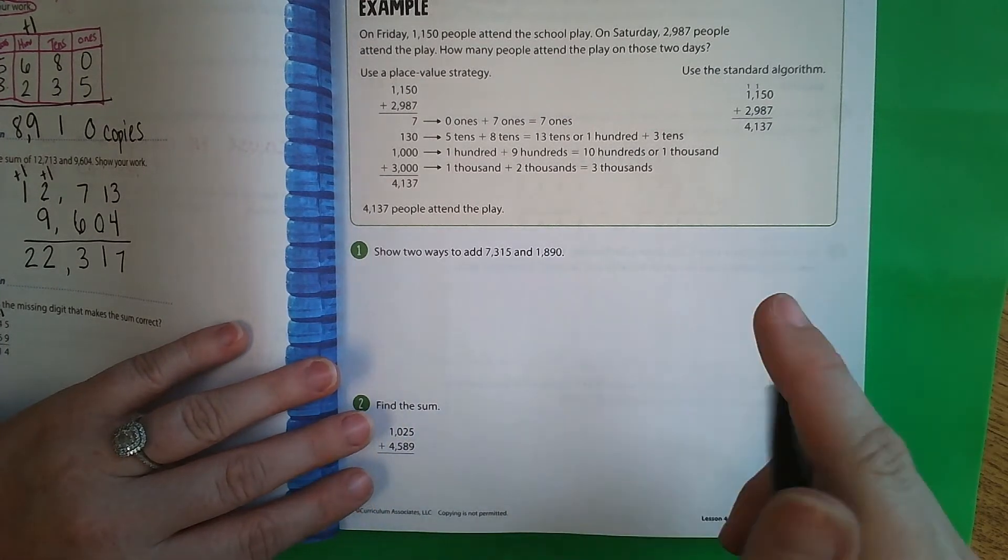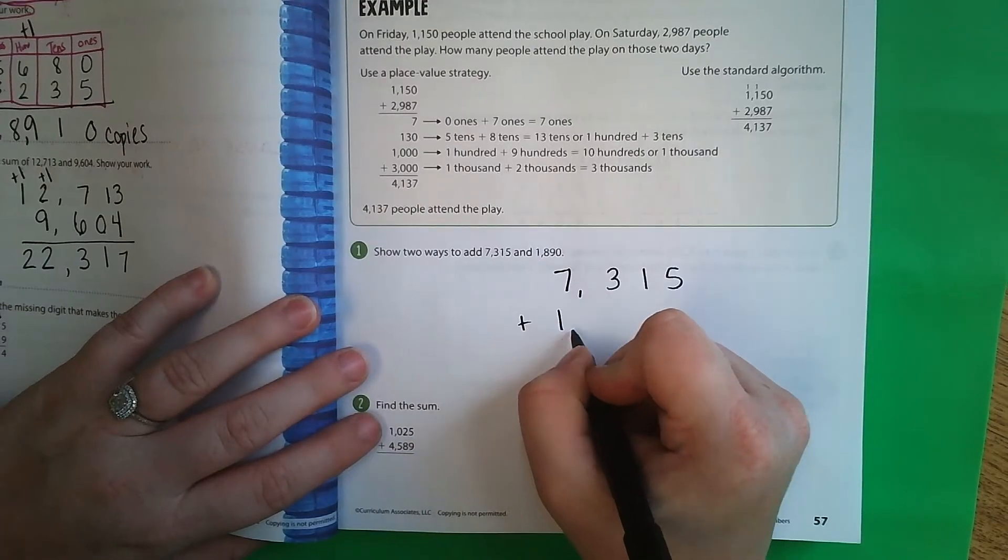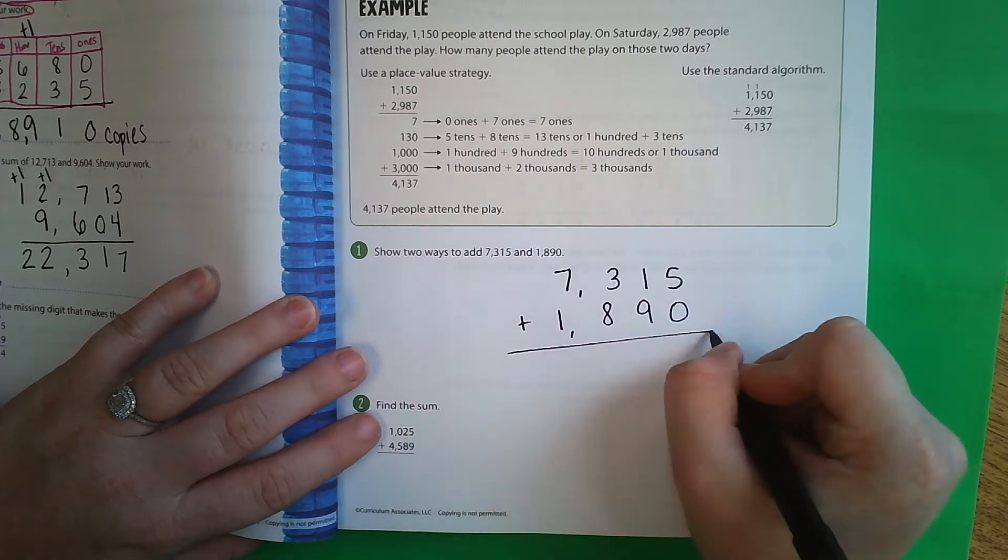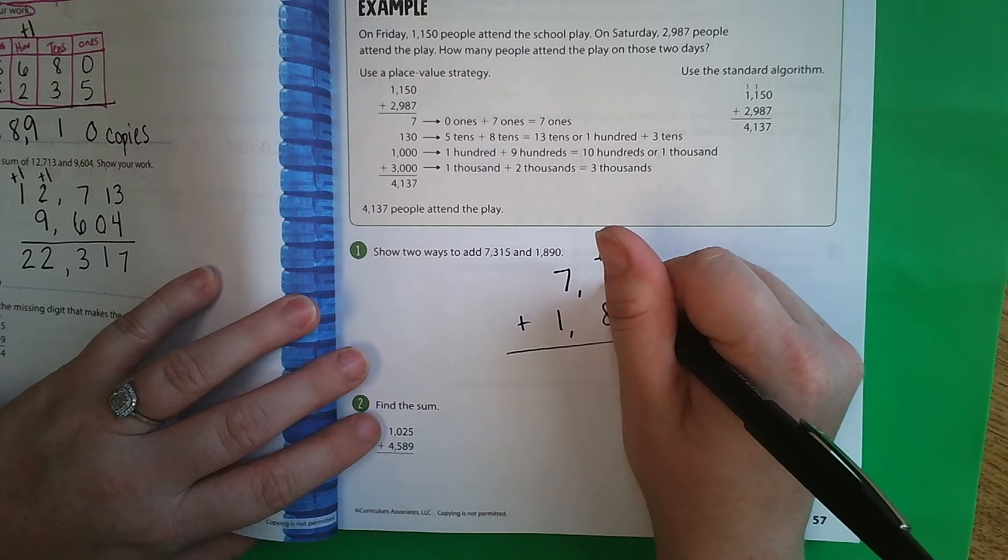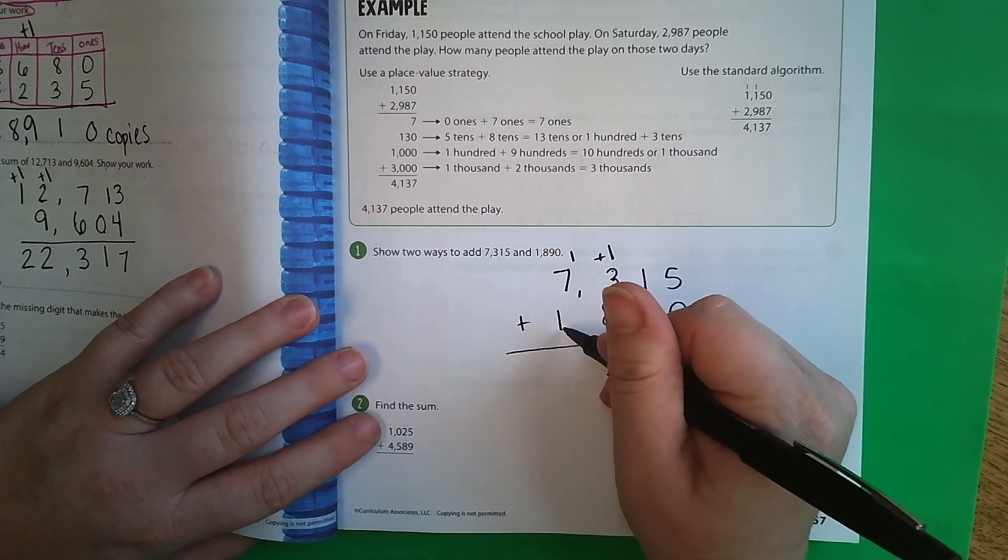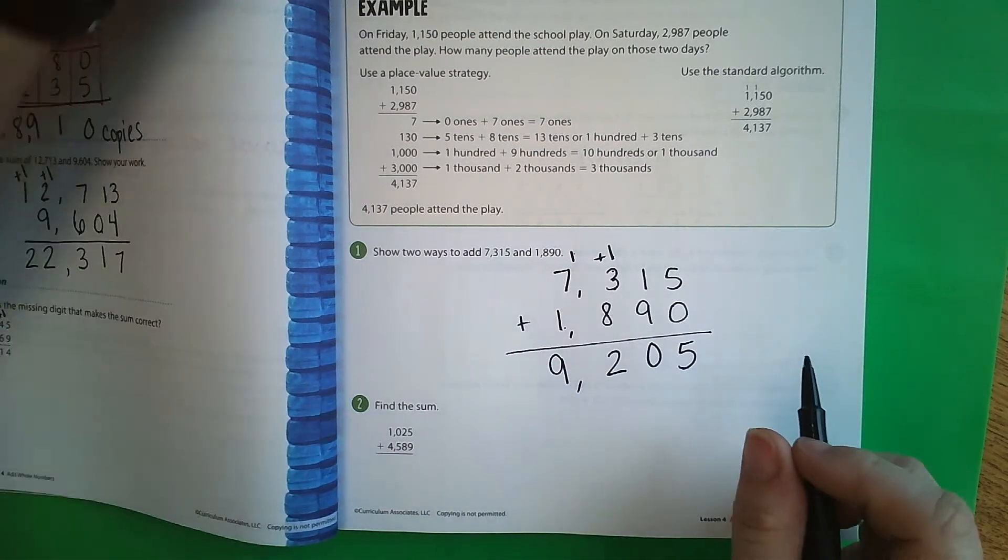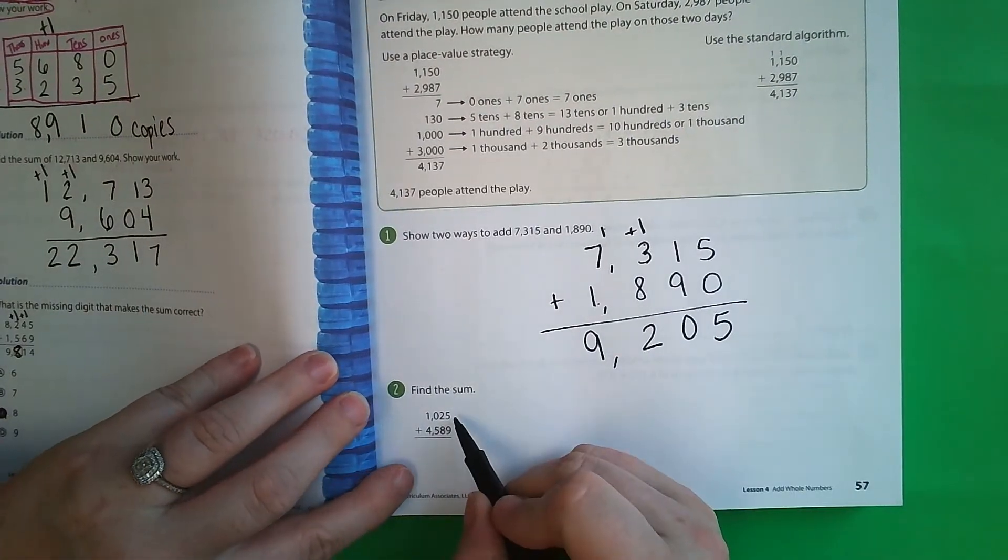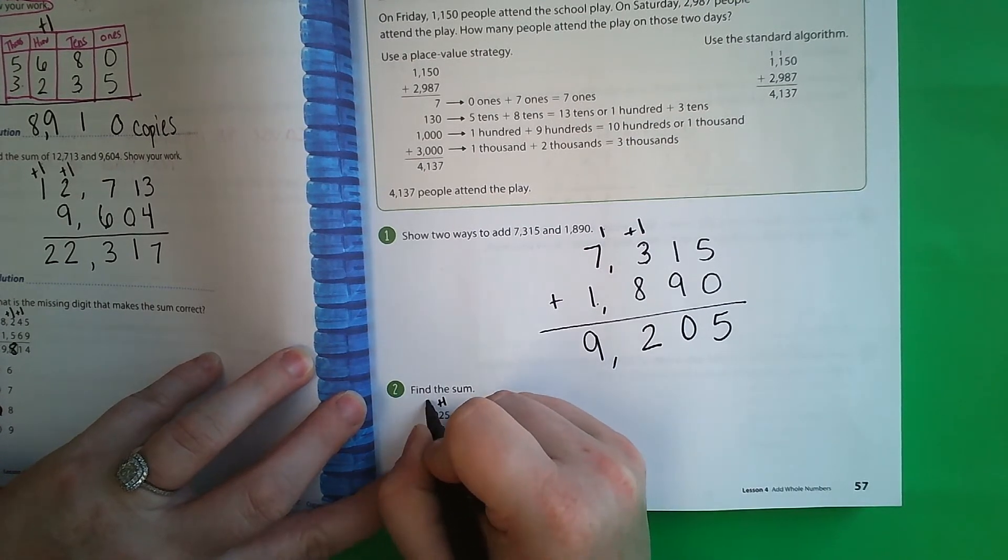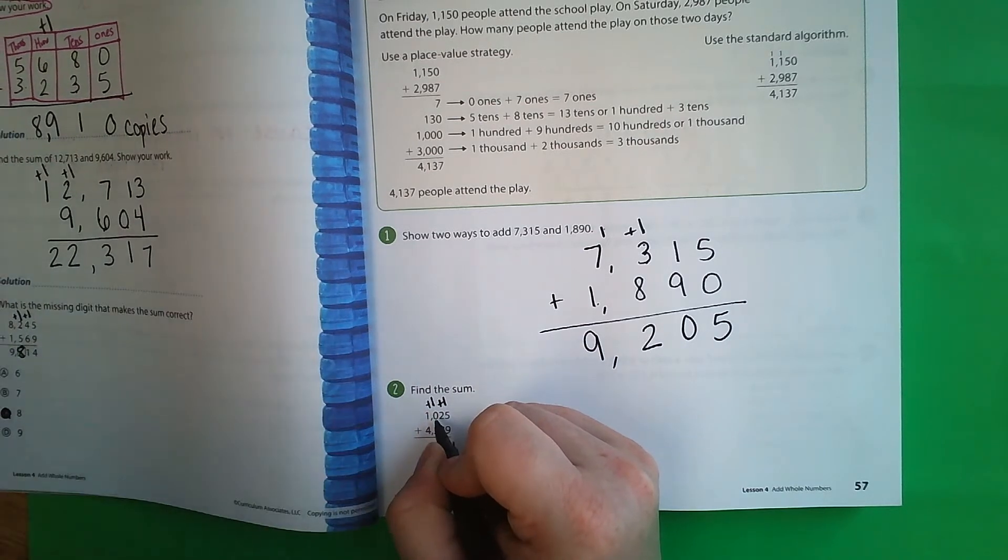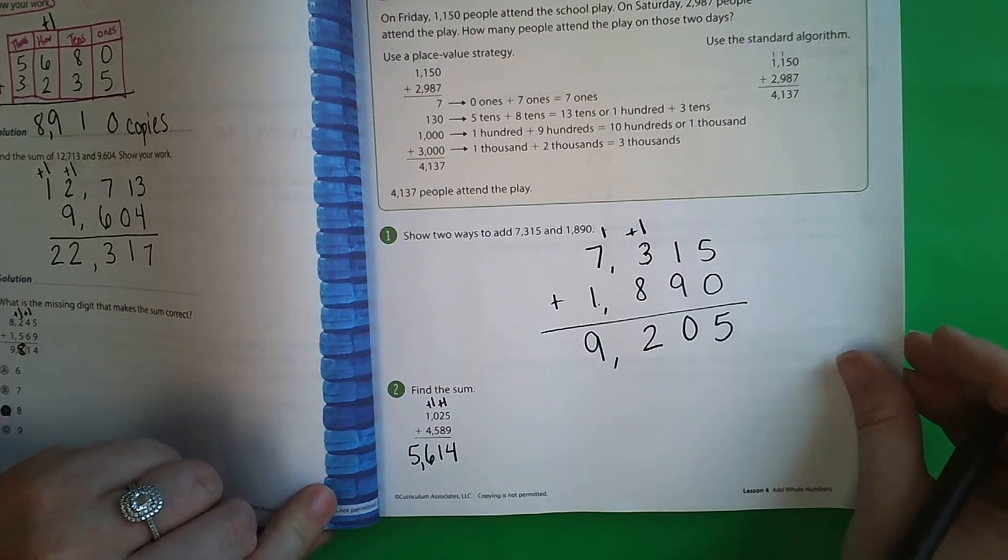Okay, I'm going to quickly go over the answers to the problems on pages 57 and 58. So first here we've got 7,315 plus 1,890. 0 plus 5 is 5. 9 plus 1 is 10. 8, 9, 10, 11, 12. 7, 8, 9. So your answer should be 9,205. Find the sum. This one's kind of small. We've got 9 plus 5, which is 14. 8 plus 2, which is 10. One more is 11. 5 plus 1, because there's a 0, is 6. And 4 plus 5 is 5. 5,614 is your answer on that one.